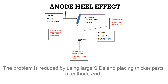This problem is reduced by using larger source image distances and placing thicker anatomical parts at the cathode end, where more photons are available to interact with the thickness. For example, if the femur was to be radiographed, the hip end is thicker than the knee end. The radiographer is to position the hip end at the cathode side of the tube, while the less thick knee area is at the anode side, where less photons are produced.